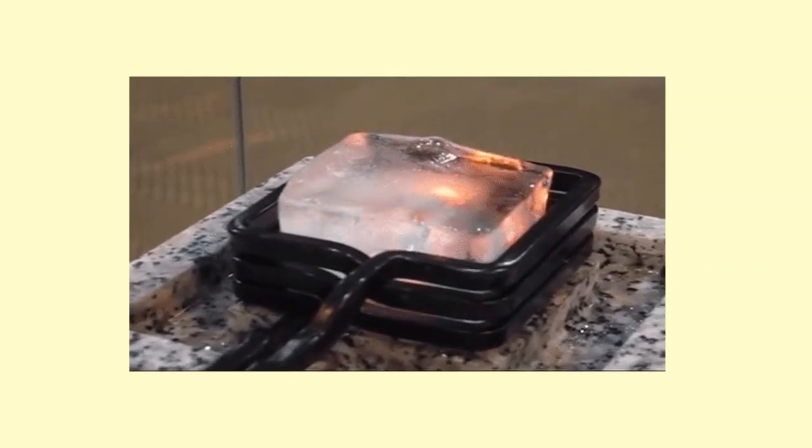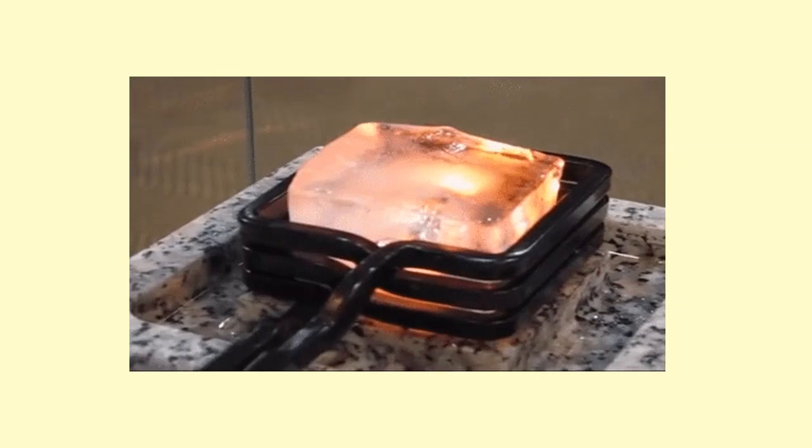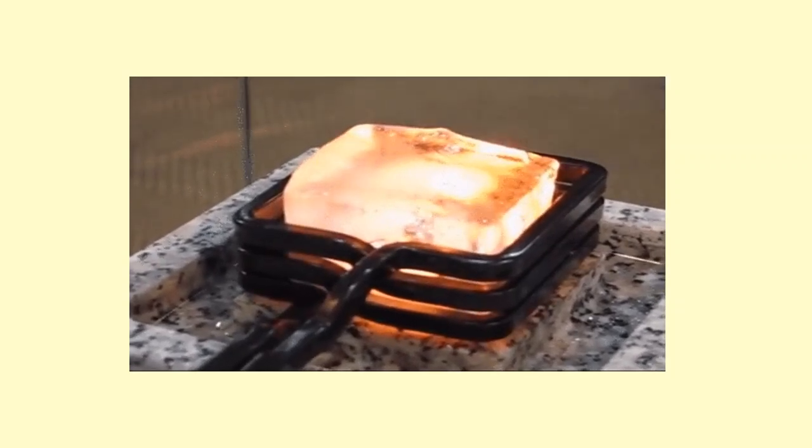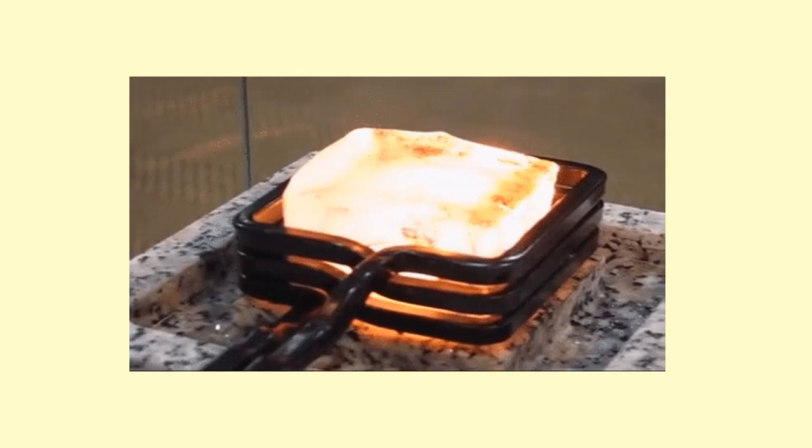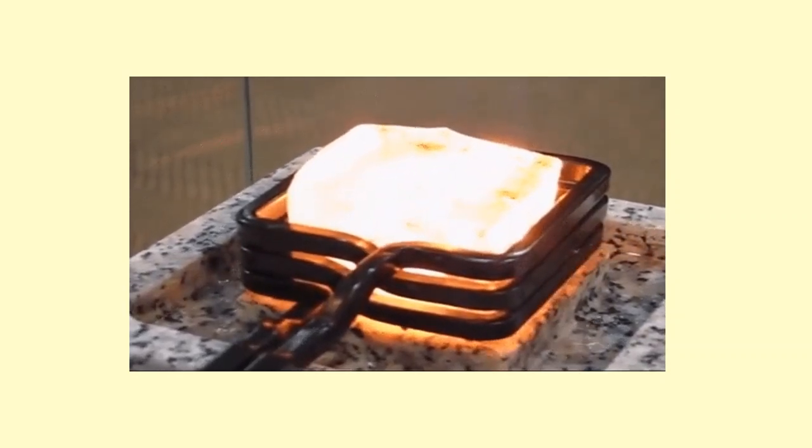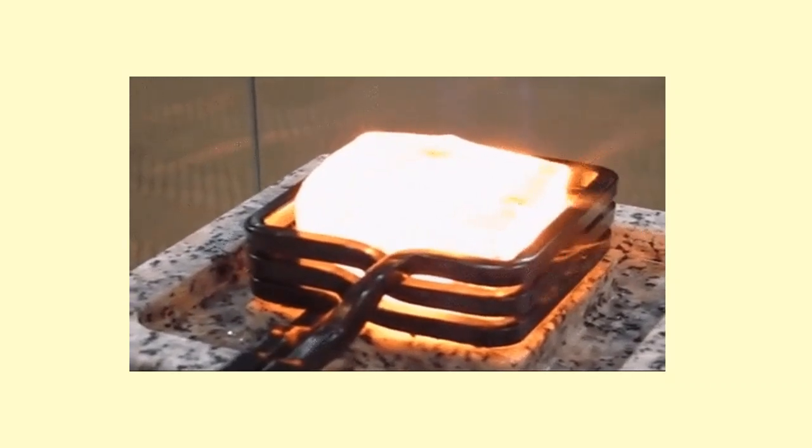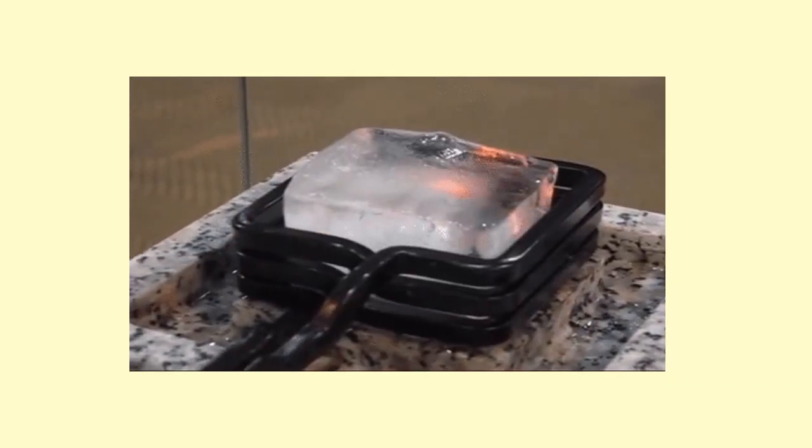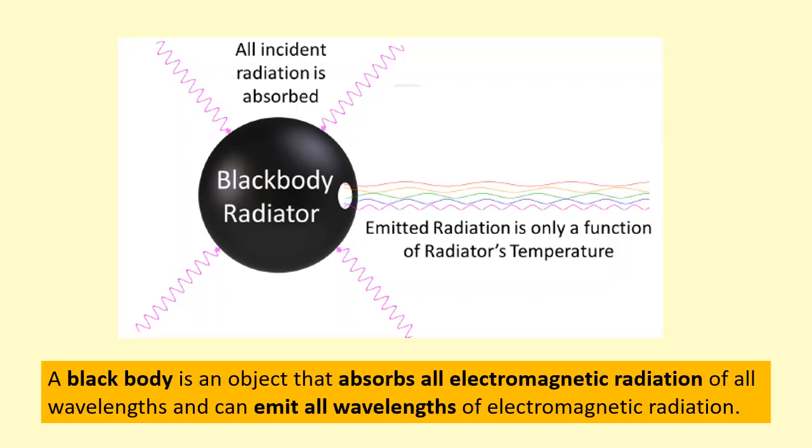It was known that as you heat up a metal or any material, it starts to emit more and more light and actually starts to glow in the visible region as well. To study the light that was emitted, they came up with an idea called a black body. A black body is an object that absorbs all the electromagnetic radiation that is incident on it.